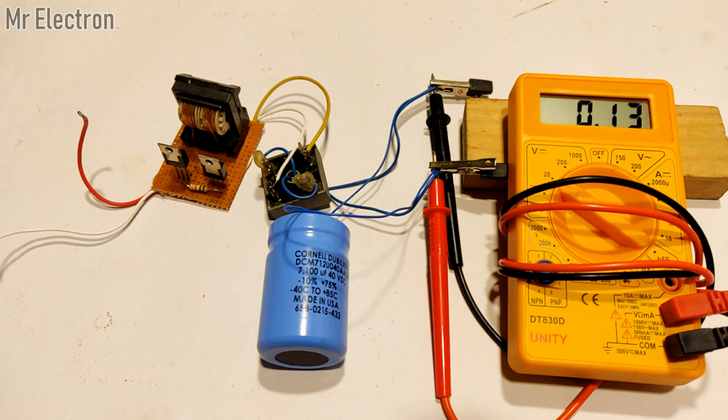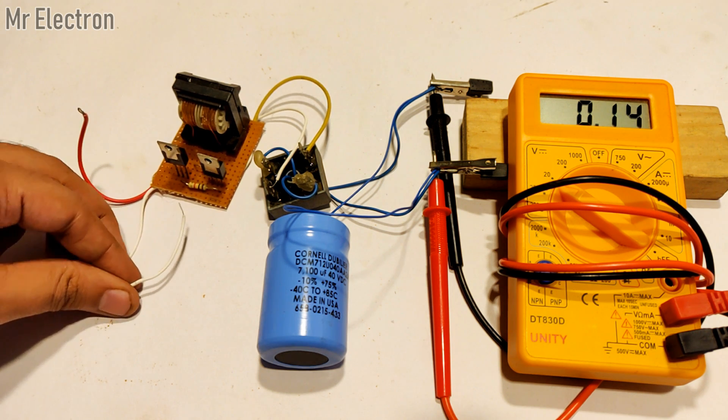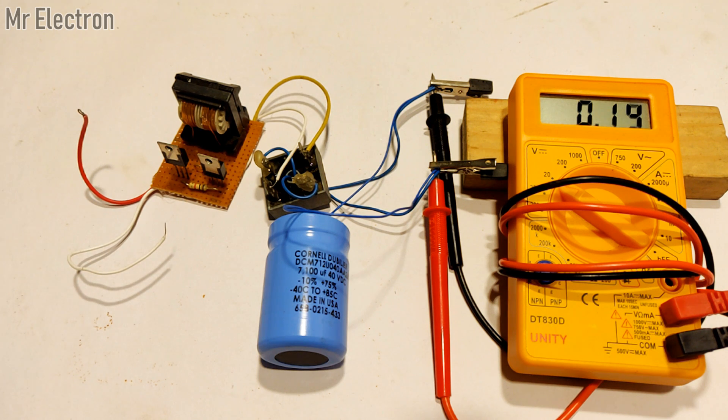But as soon as I did that, the meter again started indicating ever-increasing voltage. Now the thing is that I haven't connected any voltage source to the circuit, and still the voltage is increasing as shown by the multimeter.